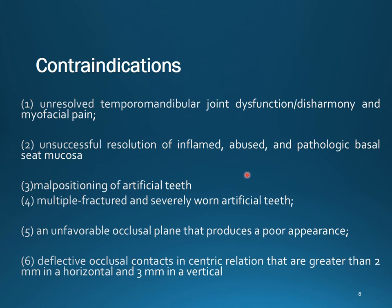Contraindications include unresolved TMJ issues, disharmony, myofascial pain, abused tissues, pathological issues in the mucosa, inflammation, teeth set in a malposition, and multiple fractured or severely worn artificial teeth. An unfavorable occlusal plane that produces poor appearance is also a contraindication — for example, when treating a single complete denture opposing natural teeth with an unacceptable occlusal plane.